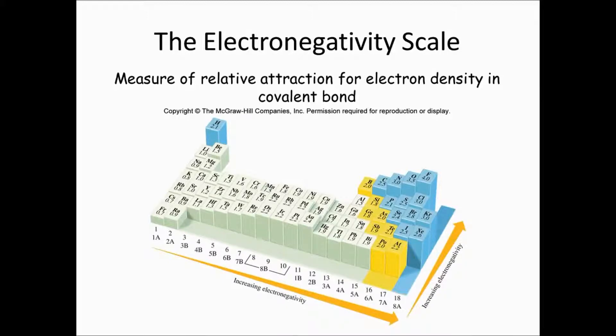Which is a measure of the relative attraction for electron density in a covalent bond. There are a number of different scales that are used, but here we are going to use the Pauling scale. And really, it's just how well it holds on that electron density. And the Pauling scale, you go from 0 to 4. So fluorine has the maximum electronegativity.